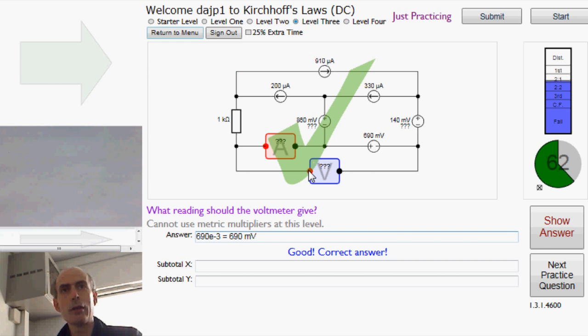And the only component that I need to worry about, in terms of its value, is this one. 690 millivolts. And that is the closed loop that I'm applying Kirchhoff's voltage law to. They're not all that easy, but it's quite nice to find one that is.